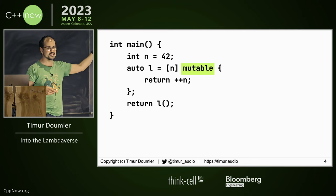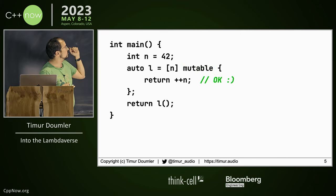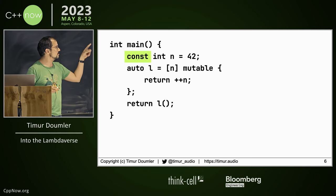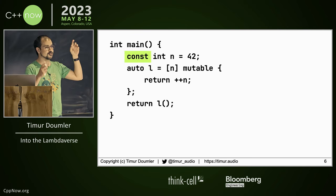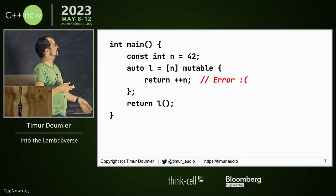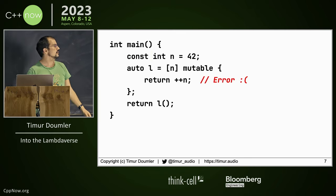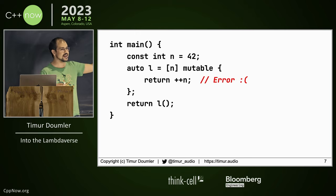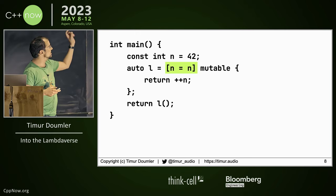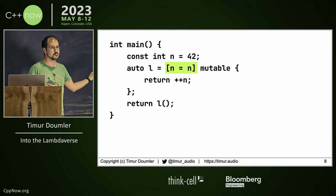Does this code compile? Yes — great. Now you're going to make this const. Does this code compile? No. On Tuesday everybody said yes, but no, it doesn't. And how do you fix that? N equals n. And does that compile? Yes.